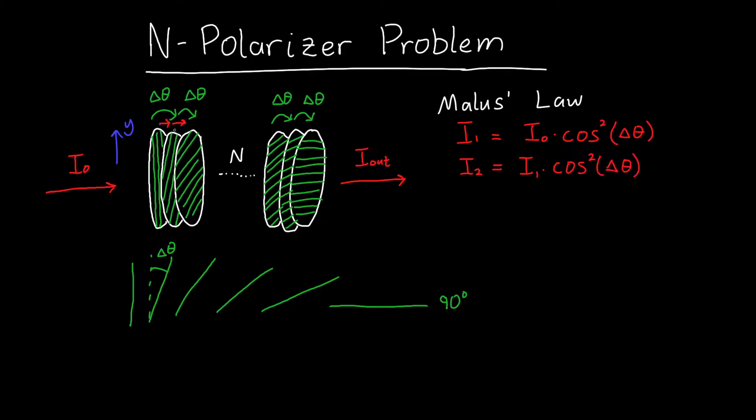Because once light comes out of the first polarizer, it's ever so slightly tilted. We care about the difference in angle between the light that comes out of the first polarizer and the polarization angle of the second polarizer. Fortunately, we always have the same angle, Δθ.